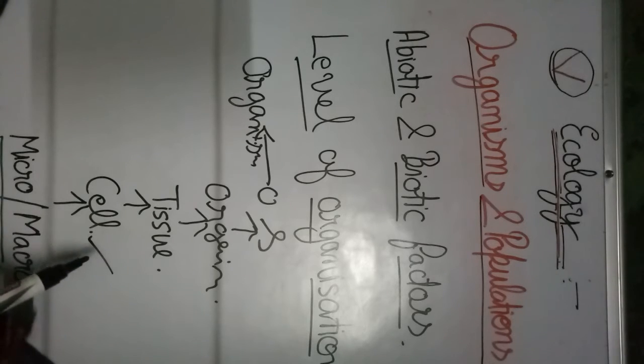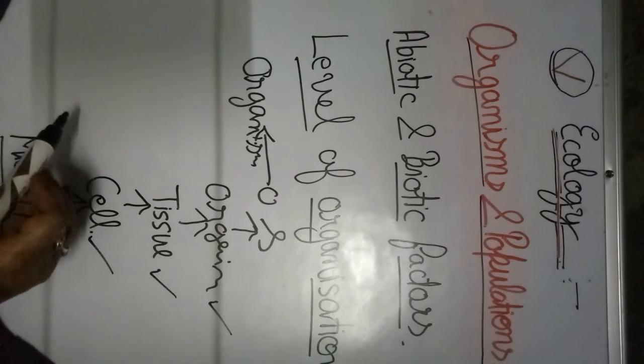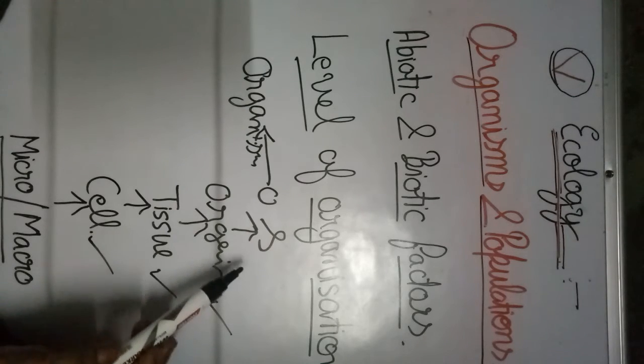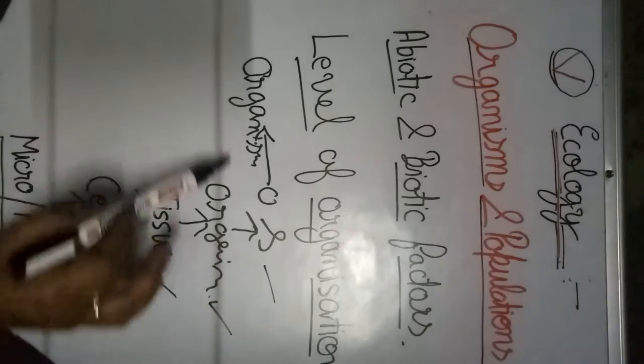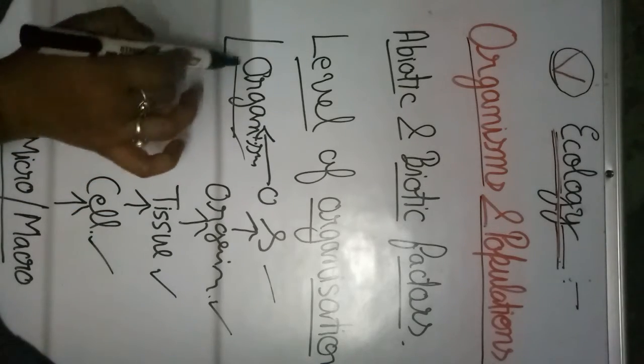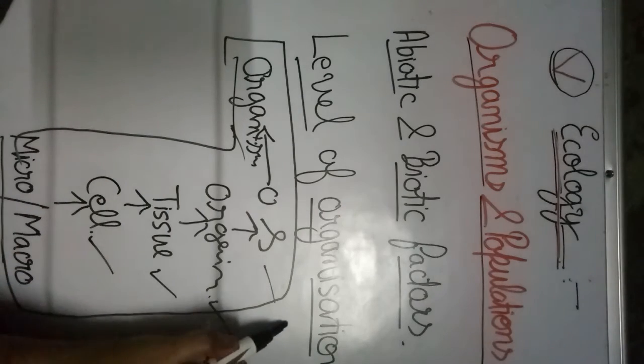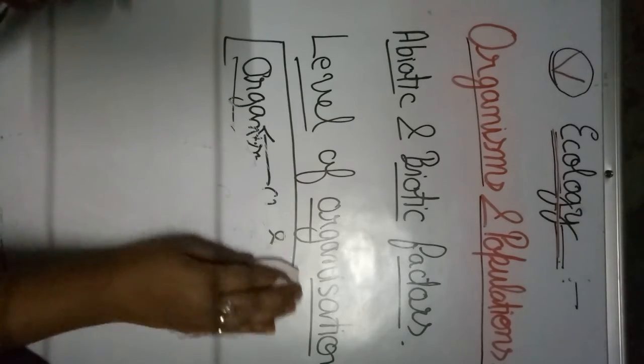So to summarize: micro and macro molecules aggregate to form a cell, then similar cells aggregate to form tissue, tissues form the organism, and then the organization of systems forms the individual organism. This is the lower level of organization.